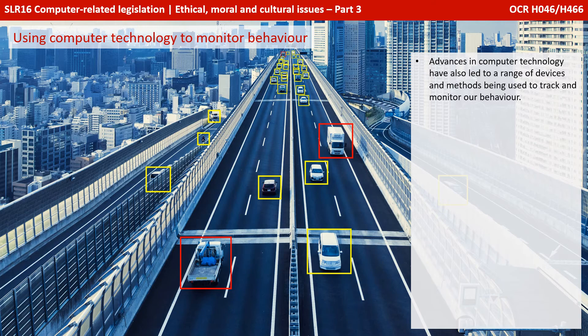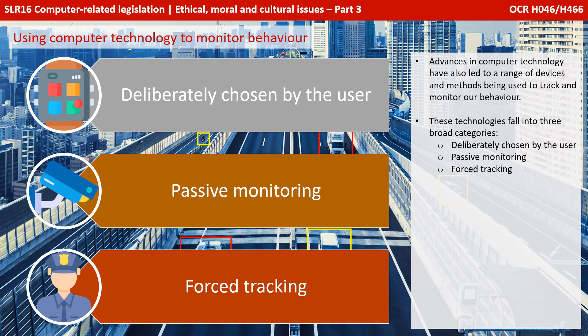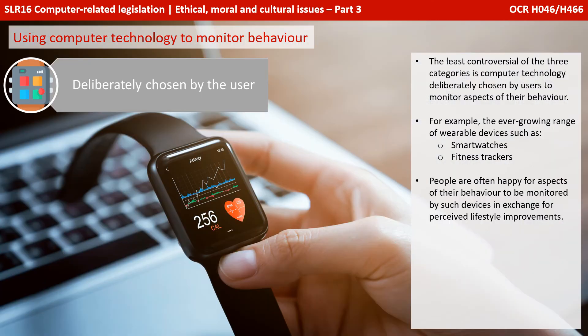Let's now look at using computer technologies to monitor behaviour. Advances in computing technology have led to a range of devices and methods that can be used to track and monitor our behaviour. These technologies fall into three broad categories: those deliberately chosen by the user, passive monitoring, and forced monitoring and tracking. The least controversial category is technology deliberately chosen by us to monitor aspects of our behaviour — for example, the ever-growing range of wearable devices like smart watches and fitness trackers. People are often happy for aspects of their behaviour to be monitored by such devices in exchange for perceived lifestyle improvements.